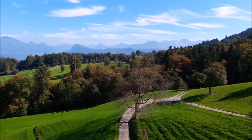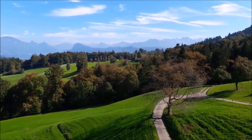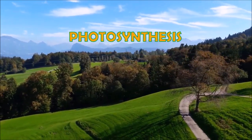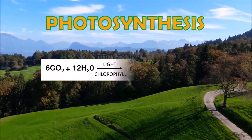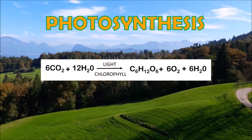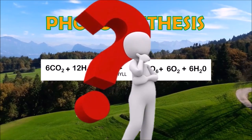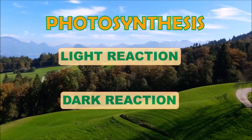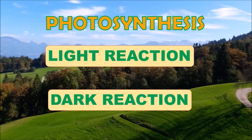In the earlier videos, several times we have defined the process of photosynthesis with an equation such as 6CO2 plus 12H2O gives rise to C6H12O6 plus 6O2 plus 6H2O. Is it so simple as shown in the equation? No, it is a very complex process involving two stages such as light reaction and dark reaction. In this video, we are going to learn about light reaction.